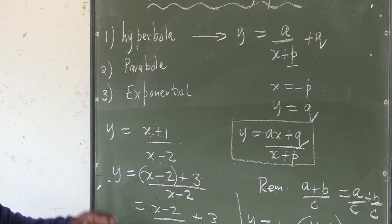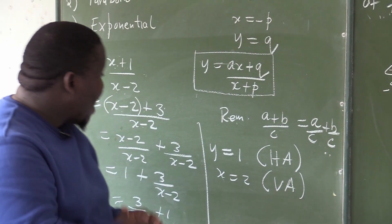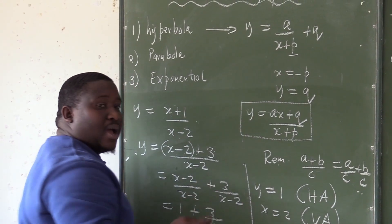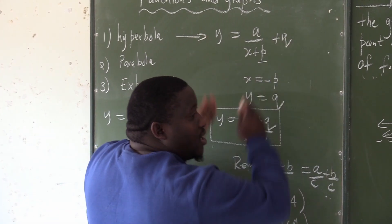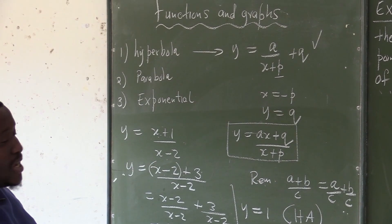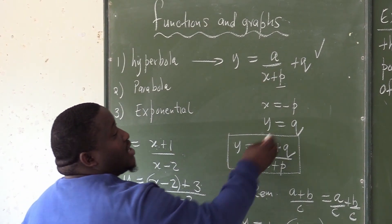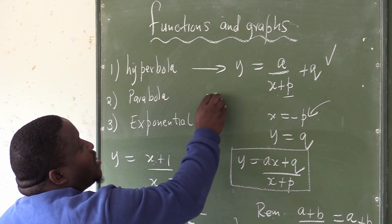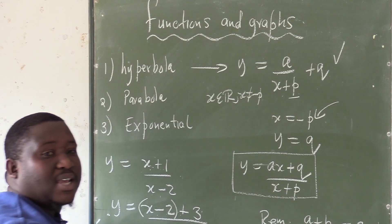On the hyperbola, one needs to be careful — if I am given the hyperbola, I must be able to give the domain and the range. Looking at the standard form, the domain of this graph will say x is an element of real numbers, but x cannot be equal to minus p. Because minus p is the vertical asymptote. It means when I say what is the domain, x cannot equal the vertical asymptote — in this case it is minus p.